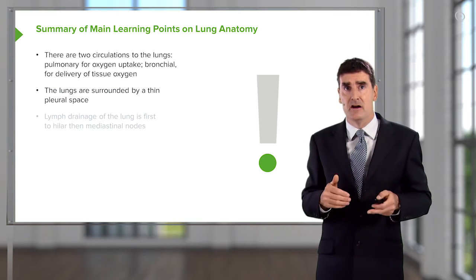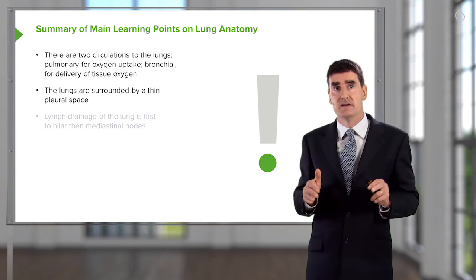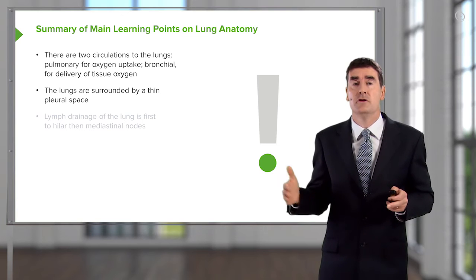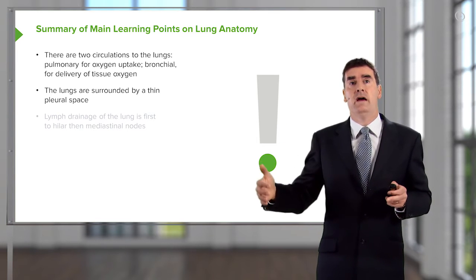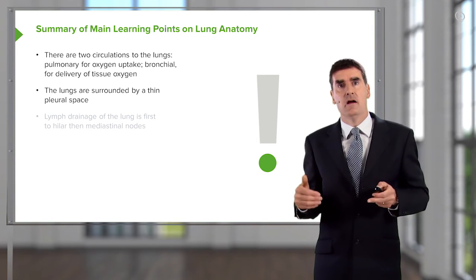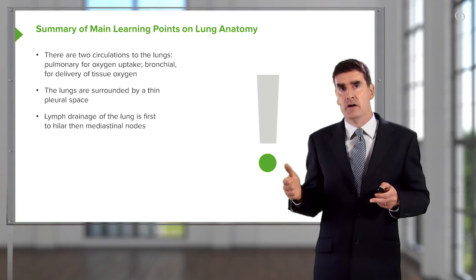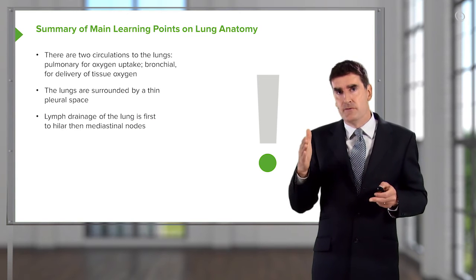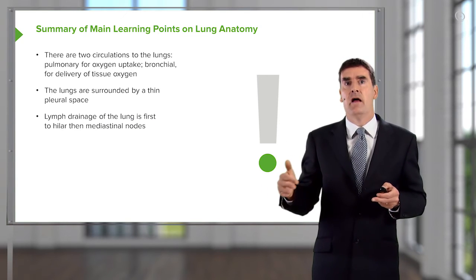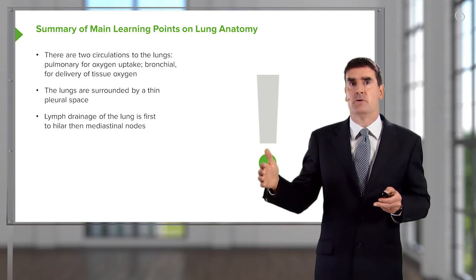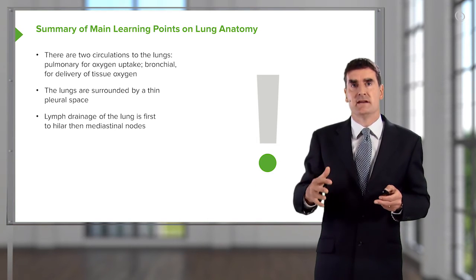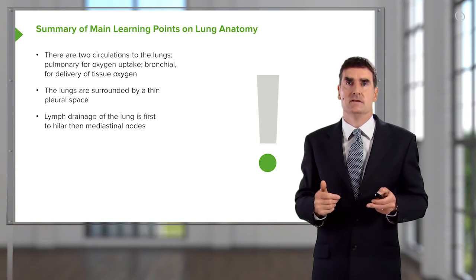The lungs are surrounded by a thin pleural space — a potential space that can become filled with pleural fluid or air in pathological circumstances. The lymphatic drainage of the lung goes first to the hilar nodes and then to the mediastinal nodes, and that dictates what happens when patients have cancer, with the metastatic spread of the disease.